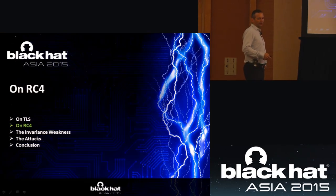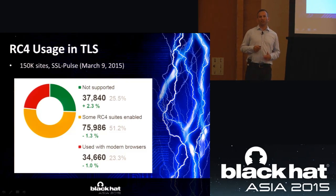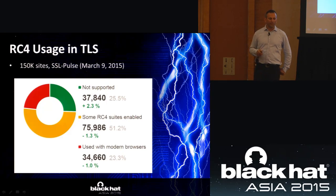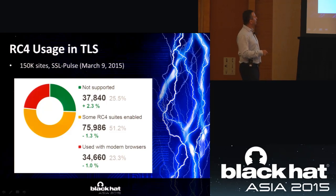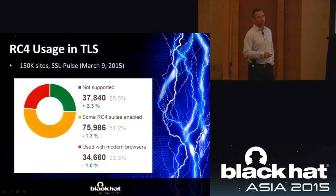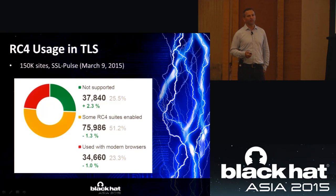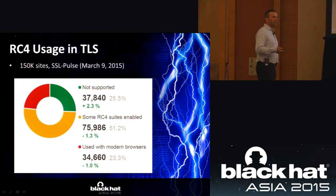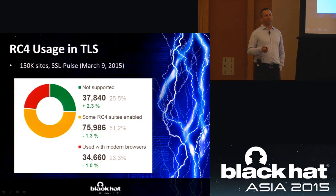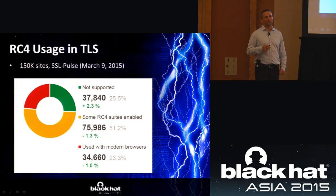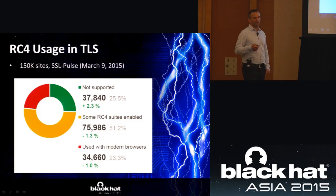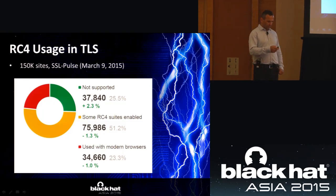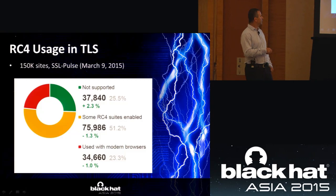This is the statistics I downloaded on March 9 regarding RC4 usage. The most important thing: 51.2% of servers participating in these statistics support some version of RC4. But more importantly, 23.3% are used with modern browsers — meaning in one out of four cases, servers working with a modern browser that supports many SSL and TLS variants and very secure cipher suites still choose to work with RC4, even though it is not the strongest cipher. This is a very significant number.